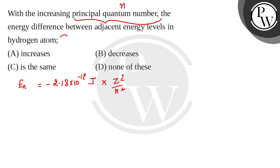In the hydrogen case, the value of z is 1. So ultimately, this will be minus 2.18 into 10 to the power minus 18 upon n square joule.